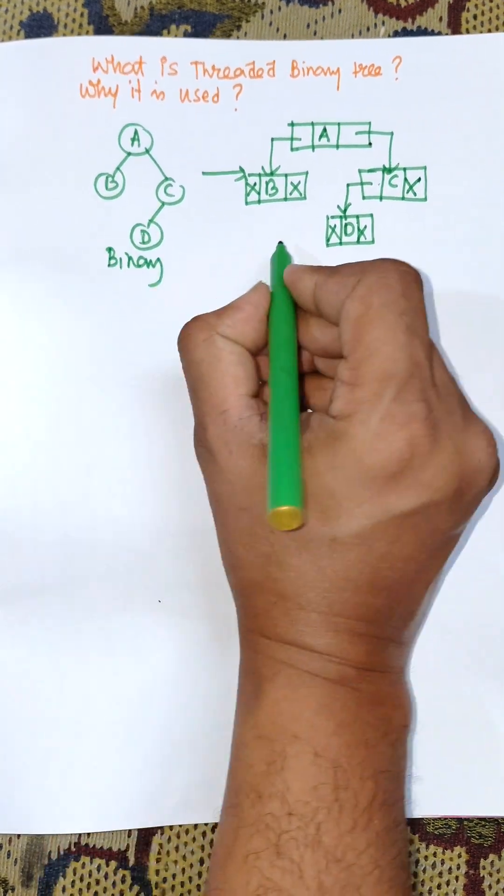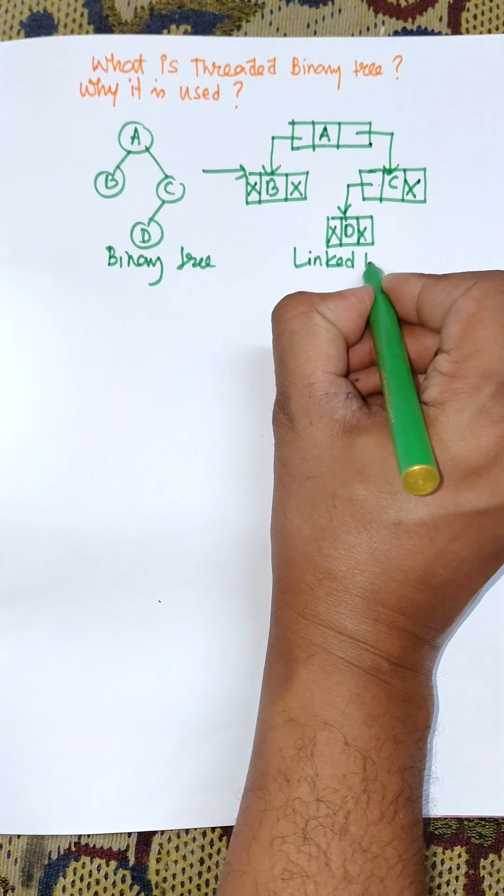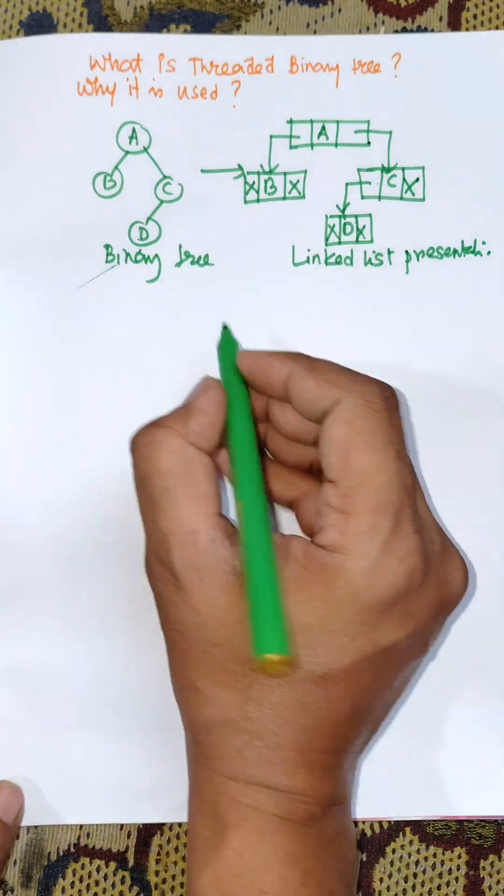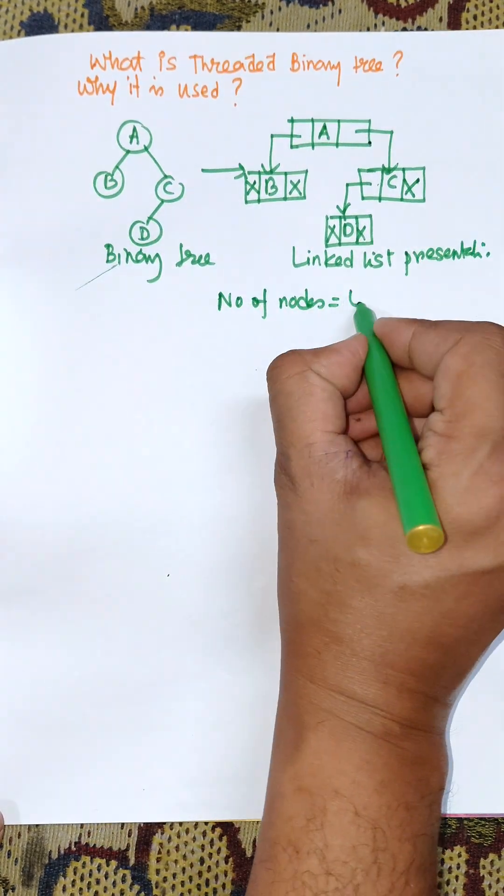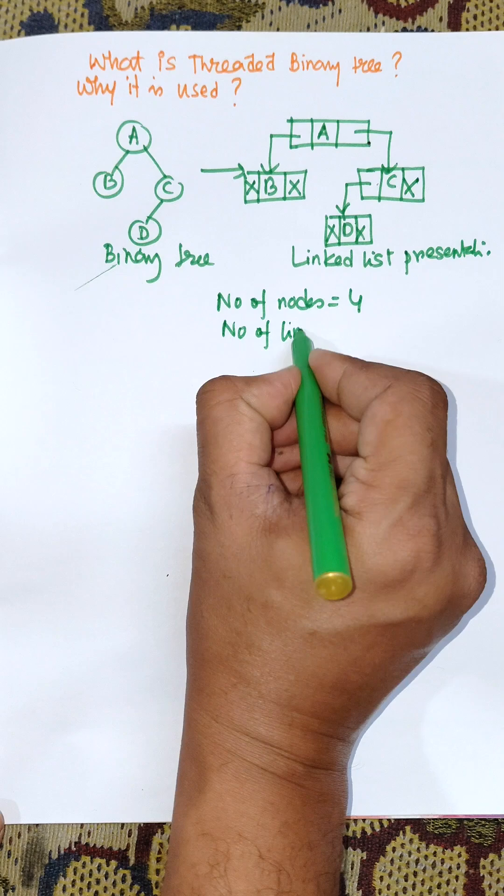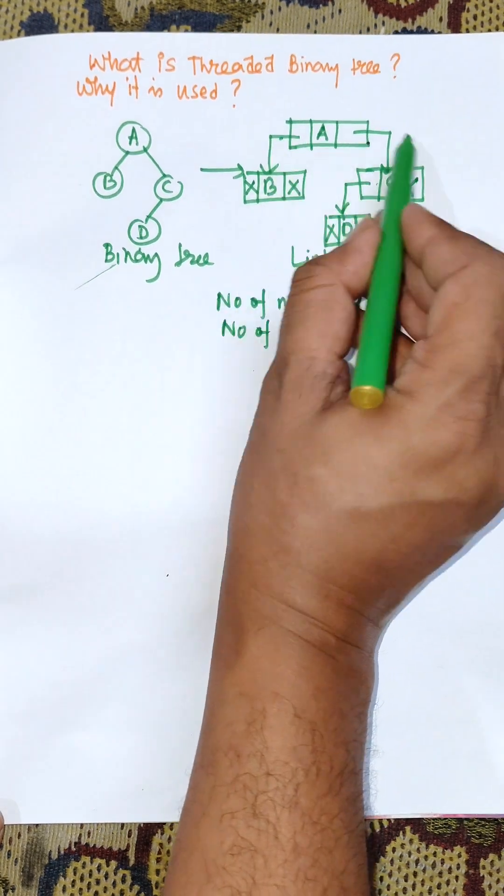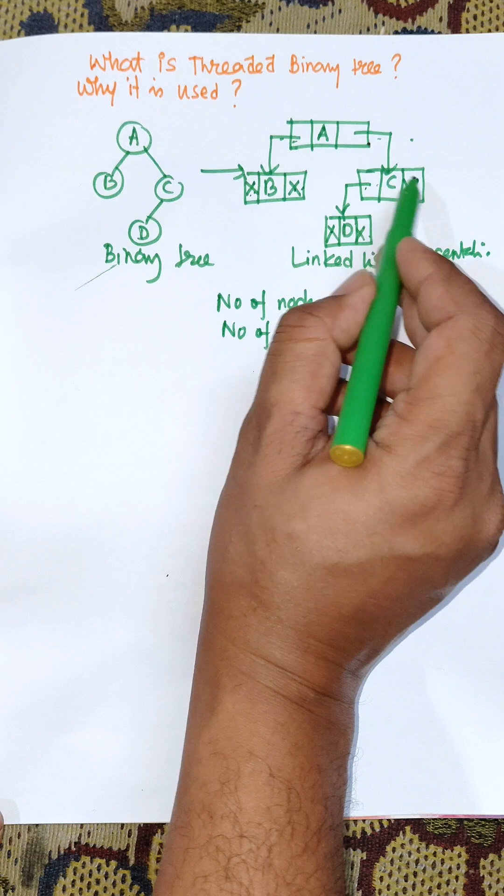Linked list presentation: number of nodes - here number of nodes equal to 4. Number of links equal to 8 total.